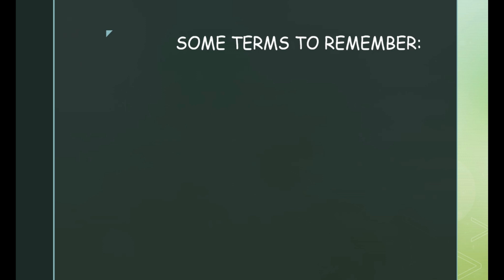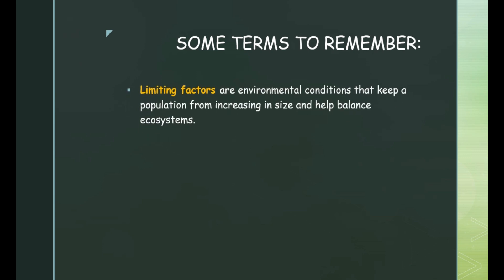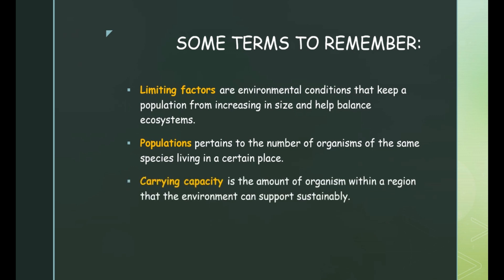Now, there are some things we need to remember when we talk about biodiversity. The first one is limiting factors. Limiting factors are environmental conditions that keep a population from increasing in size and help balance ecosystems. The second is population. It pertains to the number of organisms of the same species living in a certain place. And you have carrying capacity. It is the amount of organisms within a region that the environment can support sustainably.